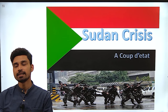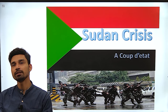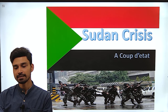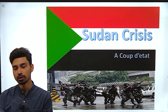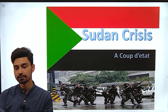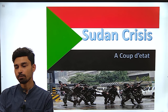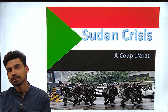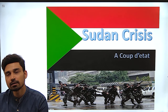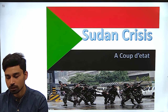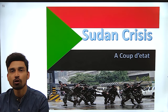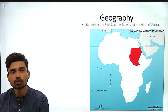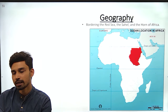Hello students, welcome to Legacy Academy. Today we have come with yet another interesting topic which has been in the news for the past few days — the crisis situation going on in Sudan due to a coup that has been done by the military commanders of Sudan. Let us delve deeper into the topic and also try to understand the historical background of Sudan that has led to the precipitation of this crisis.